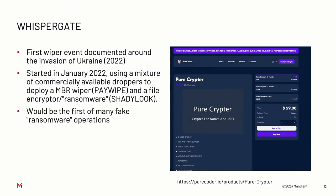So the first wiper event in Ukraine last year was called WhisperGate, first identified by Microsoft. It used a mixture of commercially available tools called PureCrypto, which we internally call Goosechase and Finetide - it's gone up in price recently, $49 last year, so inflation is affecting them. It also dropped an MBR wiper called Paywipe and a file encryptor slash fake ransomware called ShadyLuck. This was the first of many fake ransomware operations.